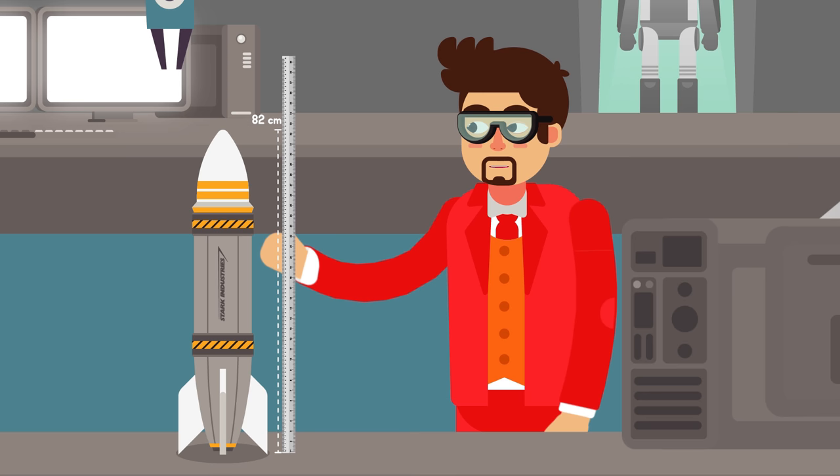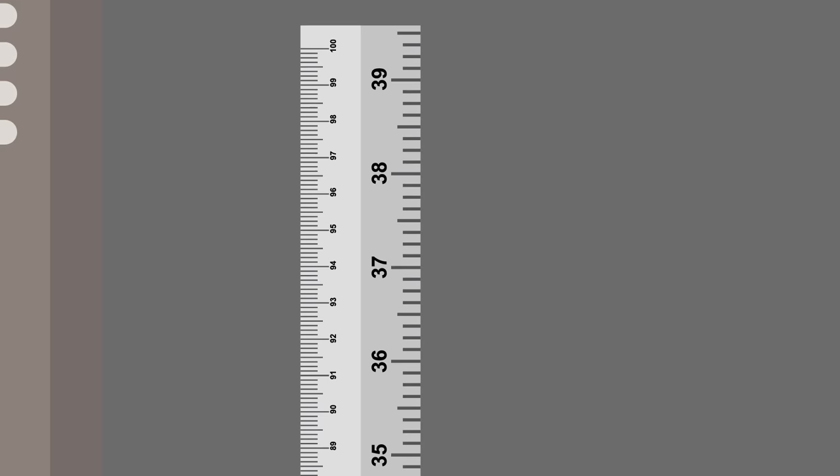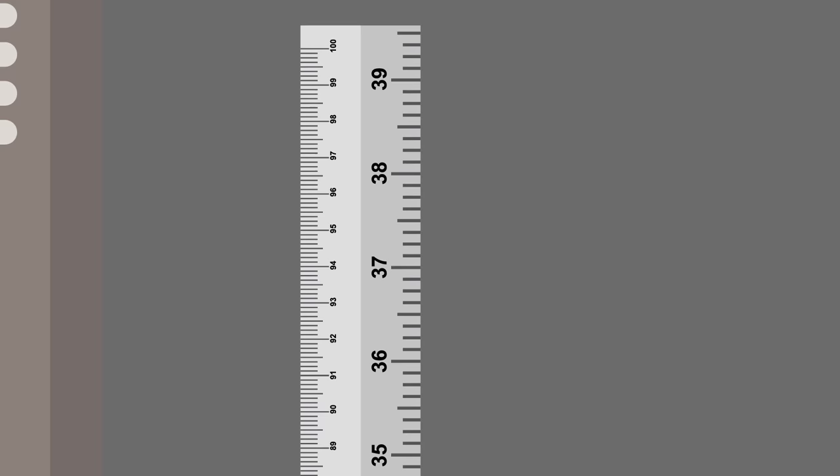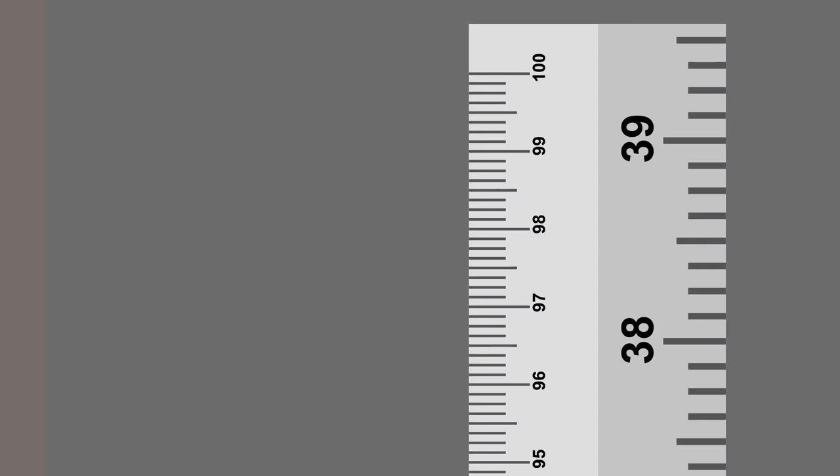Metre rule: It is used to measure the length or distance between any two points. As the name indicates, it is one metre in length, which, by convention, is divided into one hundred centimetres. Each centimetre consists of ten small divisions, known as millimetre. Thus, the smallest reading that a metre rule can give is one millimetre, also known as its least count. To have accurate measurements using a metre rule, we must keep our eyes directly above the reading points.